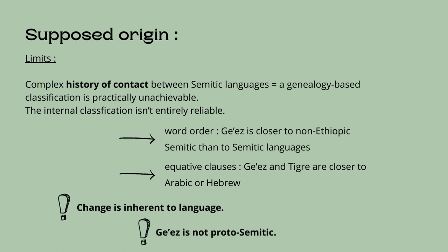Almost all previous classification proposals relied on the historical comparative approach, which aims to classify languages genealogically by comparing related languages. Since Semitic languages have a complex history of contact between them, there are many geographically adjacent languages, making a genealogy-based classification practically unachievable. Indeed, the internal classification of Ethio-Semitic languages is not entirely accurate when comparing grammatical features — be it phonology, morphology, or syntax. For example, in terms of word order, Old Ethiopic is closer to non-Ethiopic Semitic than to Tigre, Tigrinya, or any other Ethiopic languages. And considering equative clauses, Ge'ez and Tigre are closer to Arabic or Hebrew.